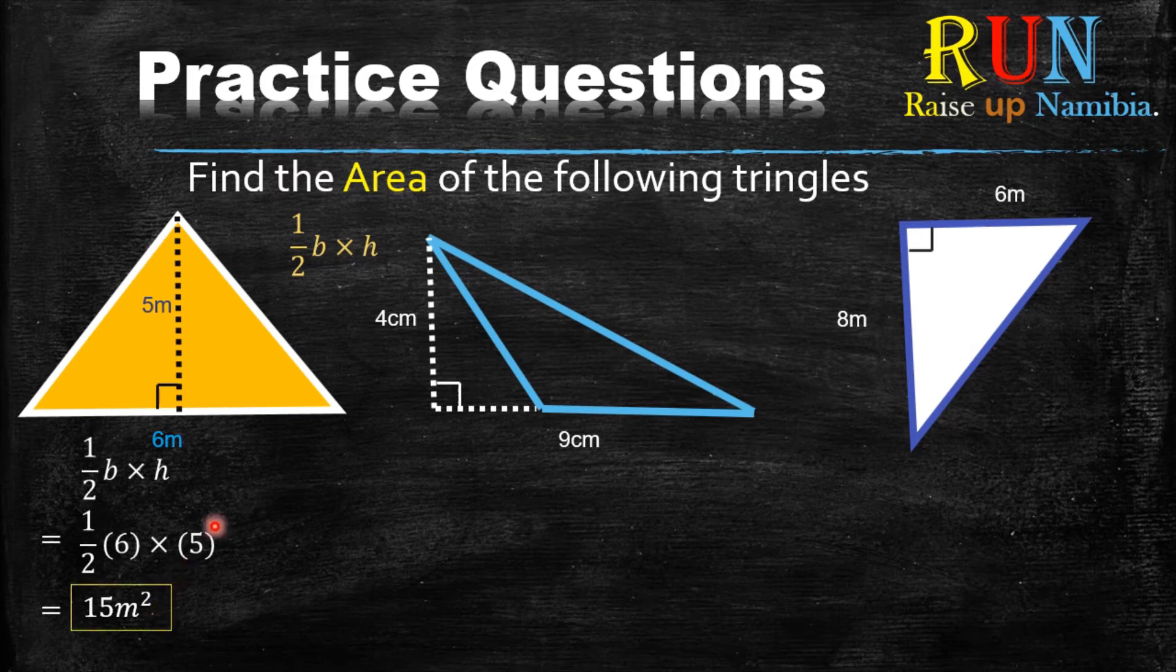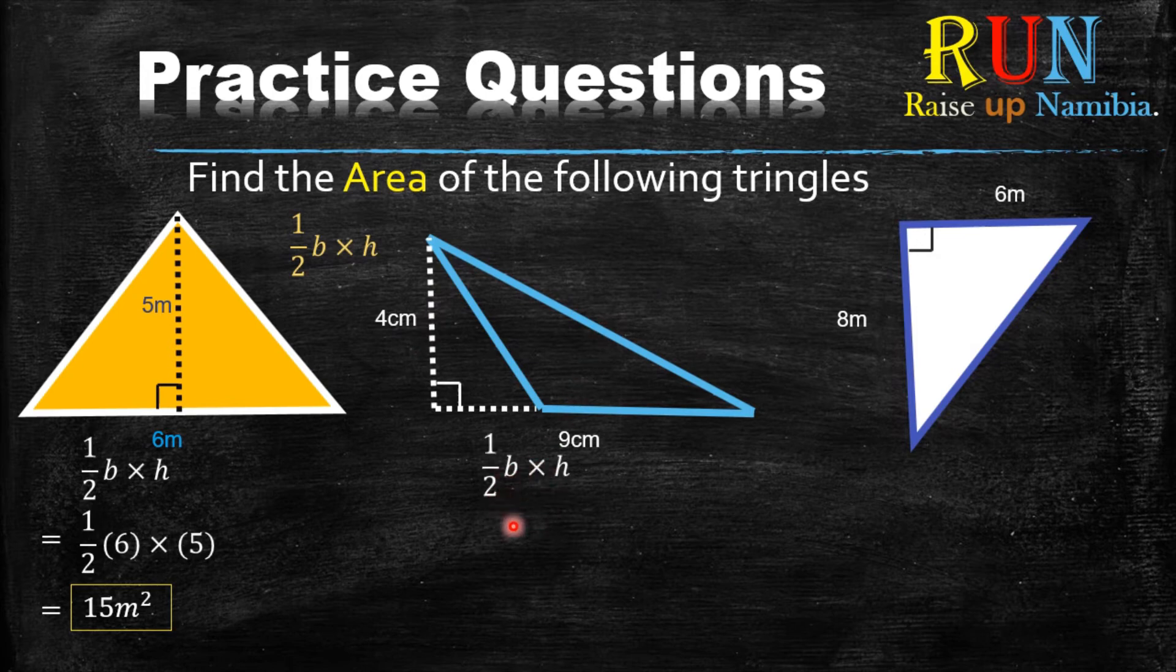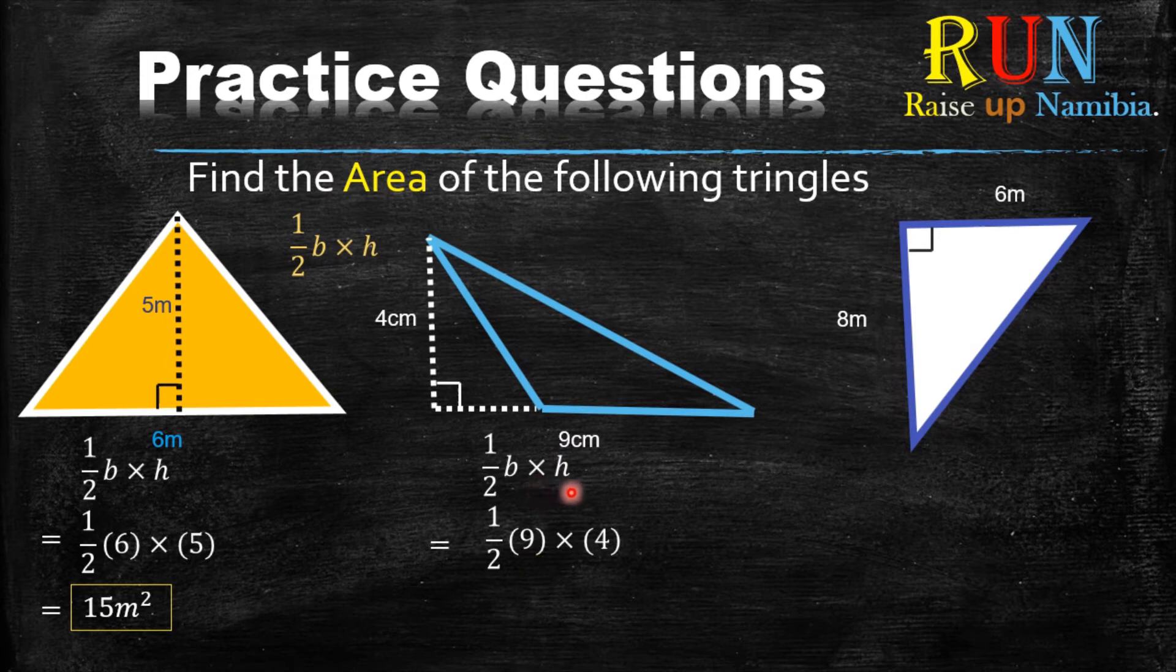So we move on to the second example. So how do you find this one? So we bring out our formula again, which is half base times height. And then you just substitute your figures. What is your base? Your base is 9. Multiplied by what is your height? Your height here is 4. So the answer will be, if you type it into your calculator,